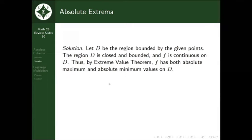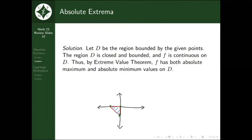Without the EVT, we could be looking over the whole region and find nothing. To use the EVT, we first have to check that our region is closed and bounded. Closed means it includes the boundaries. Bounded means the region is completely surrounded by the boundaries — the entire Cartesian plane, for example, would not be bounded. Now that we've shown D is closed and bounded, we can apply the EVT to guarantee absolute maximum and absolute minimum values.